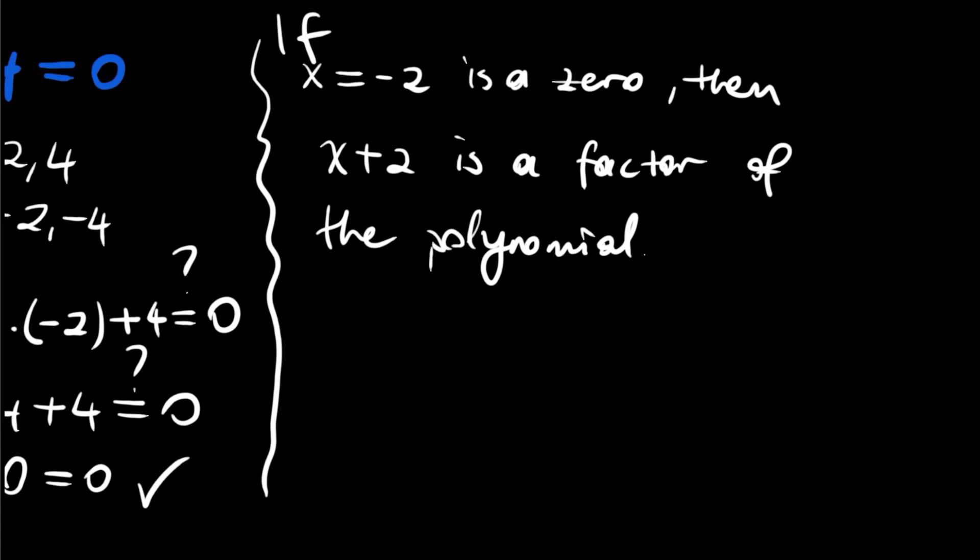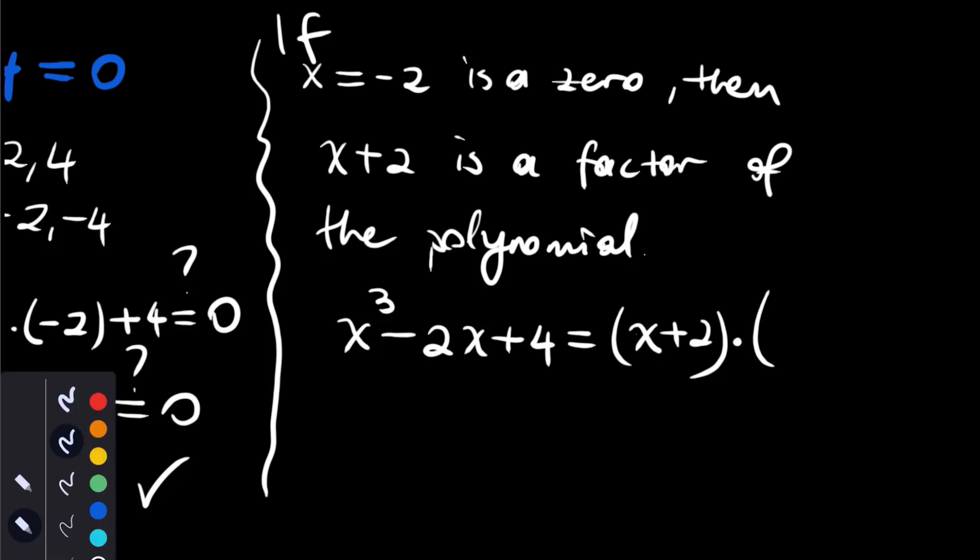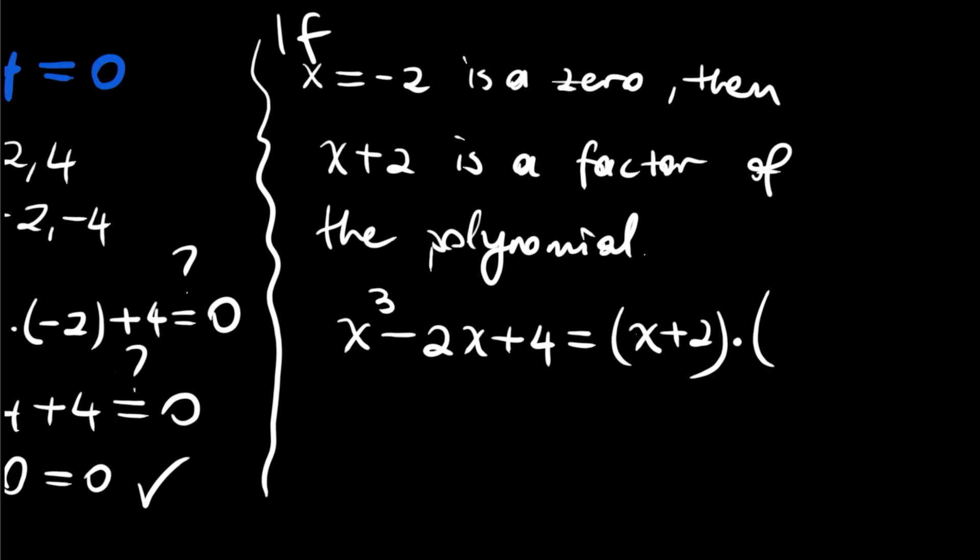So we can write x³ - 2x + 4 = (x + 2) times some quadratic expression. Let's try to find this. We need some x² term to get our x³.